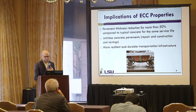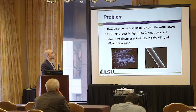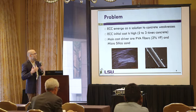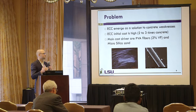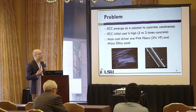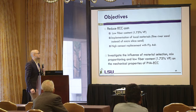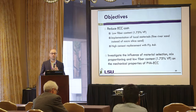What is the problem with ECC right now? It emerged as a solution for the weaknesses of concrete, but ECC has an initial cost of about two to three times that of concrete. If your cost is more than two times that of concrete, the economics may not be there. One of the main objectives of our project is to lower the cost. The main cost drivers are PVA fiber, used at 2% volume fraction, and micro-silica sand. Our objectives are to produce ECC with local ingredients — replacing the micro-silica sand with a fine river sand — and to reduce fiber content from 2% to 1.75% volume fraction, while also replacing cement with high quantities of fly ash.